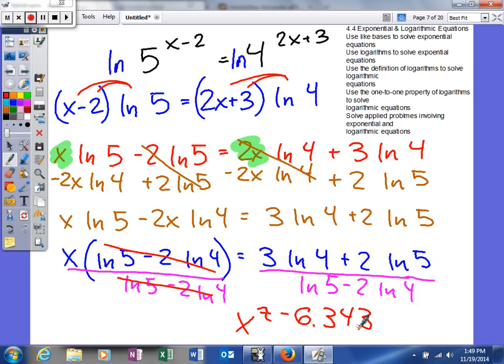So, again, what we're trying to do is we have unlike bases. So you can either take the common log or the natural log, use the power rule, distribute, get your variables on the same side, everything else on the other, factor out your x, and then that will allow you to solve for x.